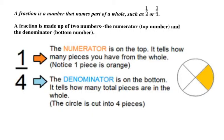Before we look at having to add and subtract, you first need to know the parts of a fraction. A fraction is a number that names parts of a whole, such as 1 half or 3 fourths. So that would be 1 out of 2 parts and you have 3 out of 4 parts. A fraction is made up of 2 numbers, the numerator, which is the top number, and the denominator, which is the bottom number.